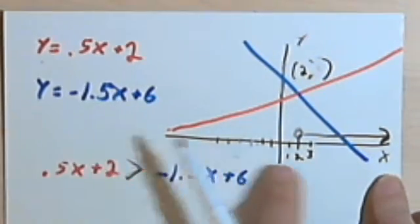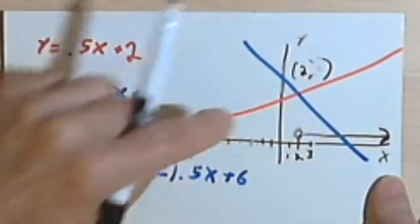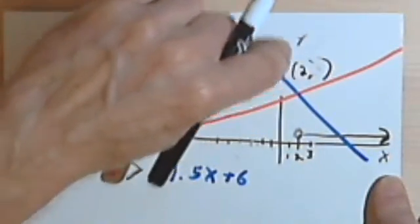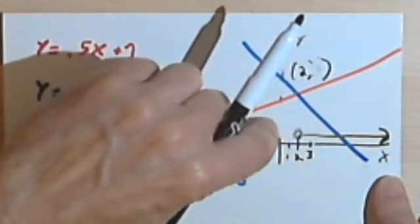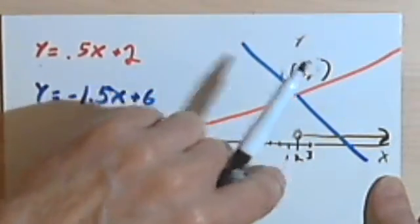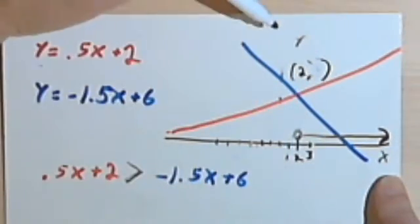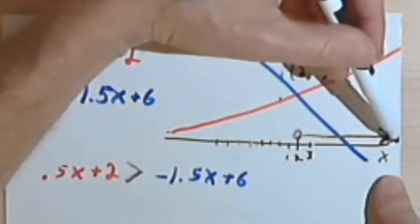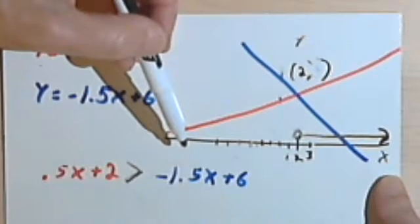If you think about it, I've just converted—because I don't care about y, I can actually just get rid of this y-axis. I've just converted my coordinate plane into a simple number line.